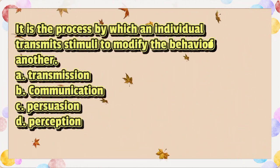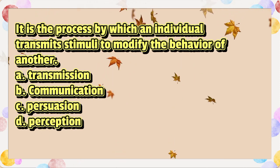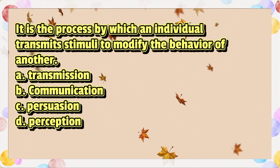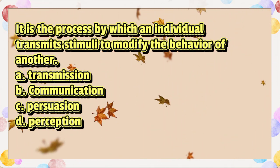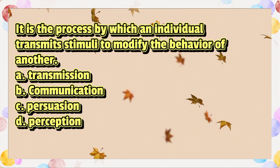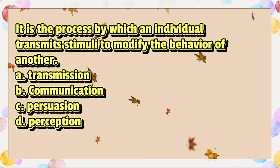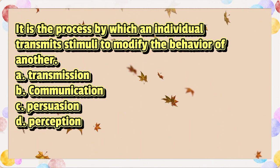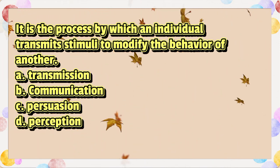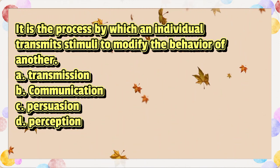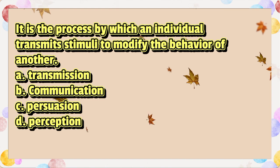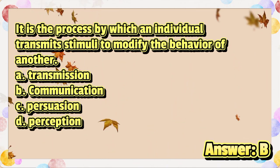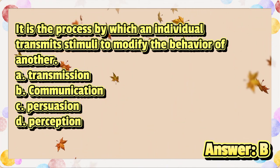It is the process by which an individual transmits stimuli to modify the behavior of another. A. Transmission. B. Communication. C. Persuasion. D. Perception. The answer is letter B.